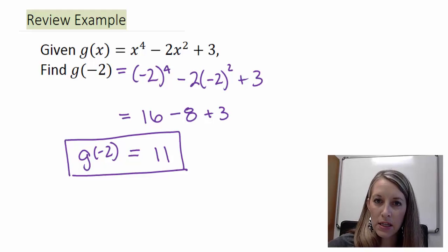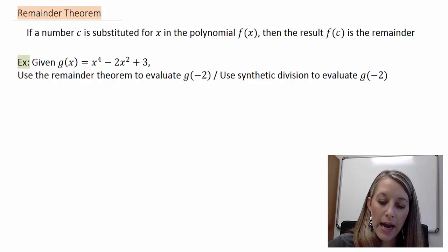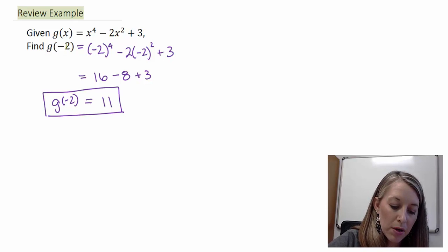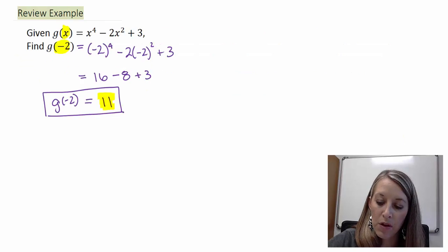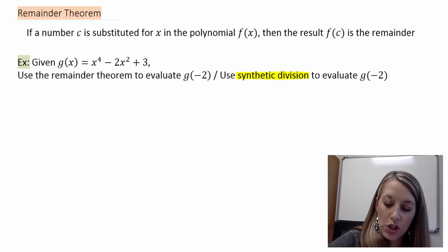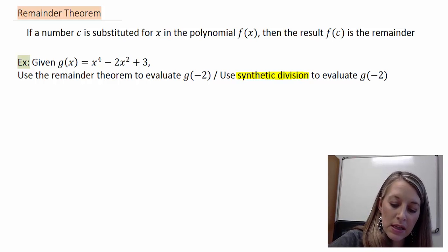Keep that in mind — we'll come back to this in a second. The remainder theorem says: if a number c is substituted in for x in the polynomial f of x, then the result f of c is the remainder. This is what we're talking about when we do synthetic division, not just our typical way of simplifying. The remainder theorem gives us an additional way to evaluate these. We did g of negative 2 by substituting it in, but we can also do it using synthetic division.